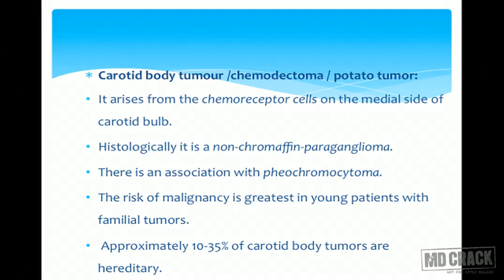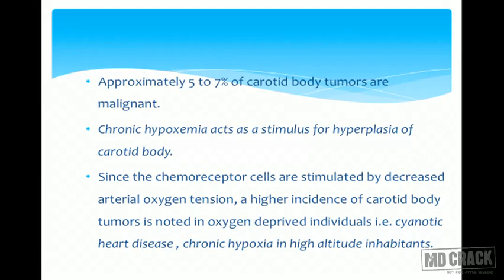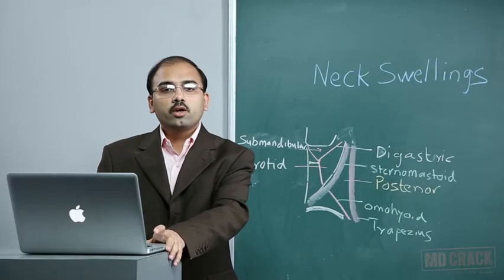There is an association with pheochromocytoma, so patients may have raised blood pressure. The risk of malignancy is greatest in young patients with familial tumors. Approximately 10 to 35 percent of carotid body tumors are hereditary — this specific range should be kept in mind. Approximately 5 to 7 percent are malignant.